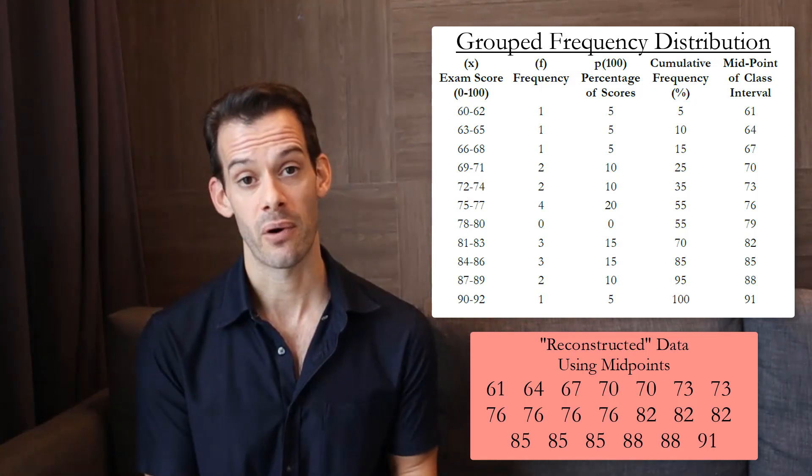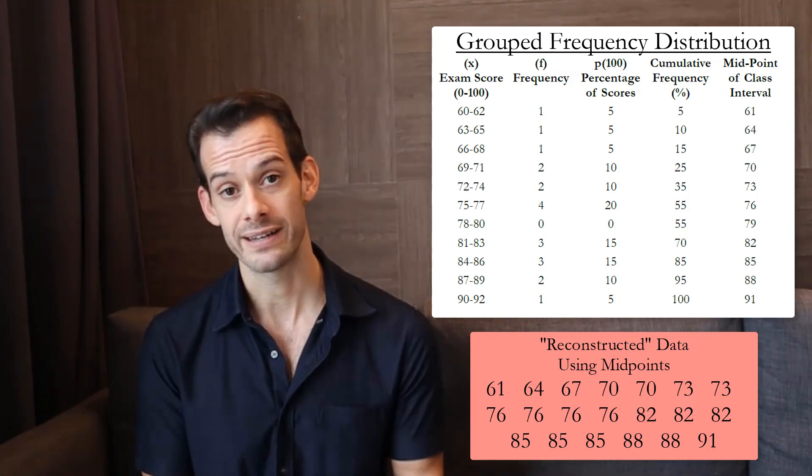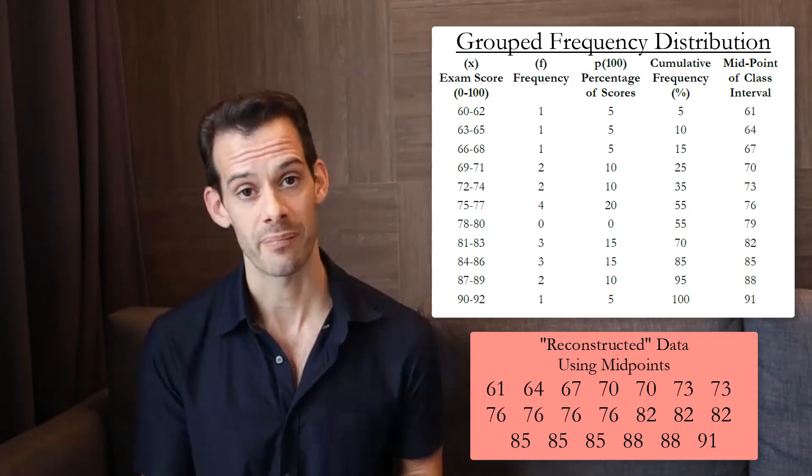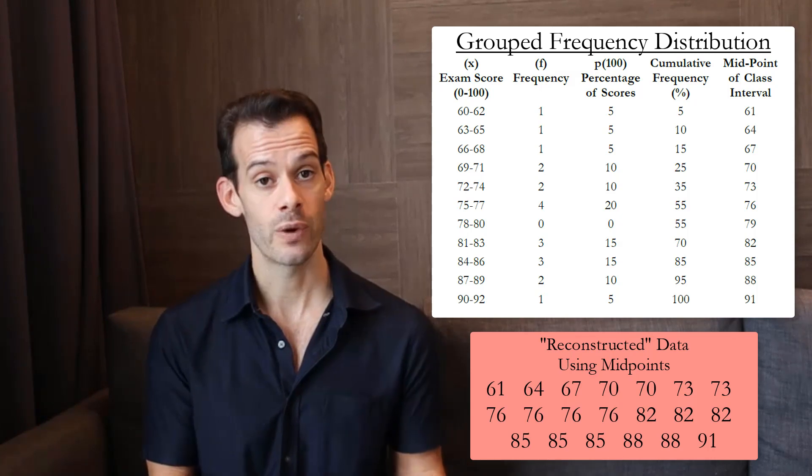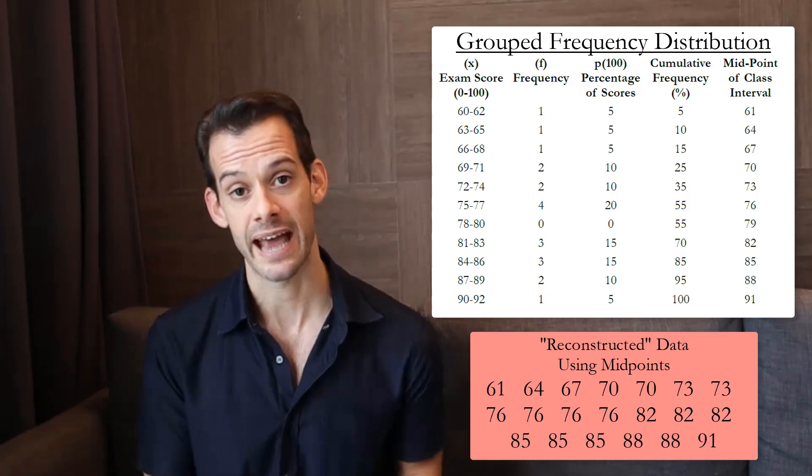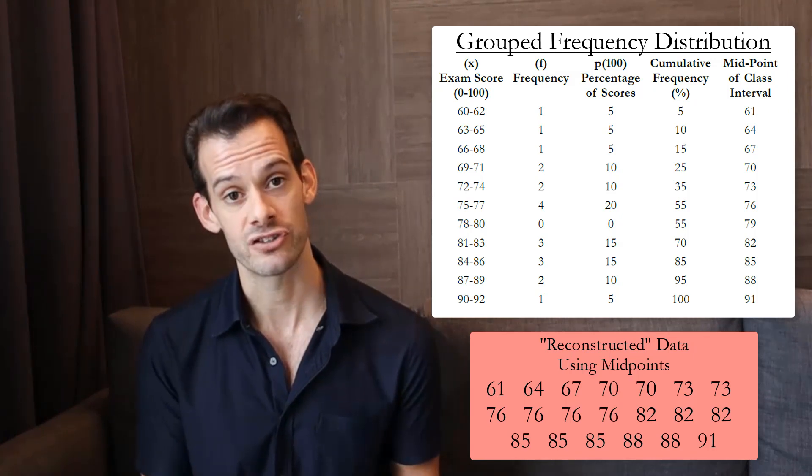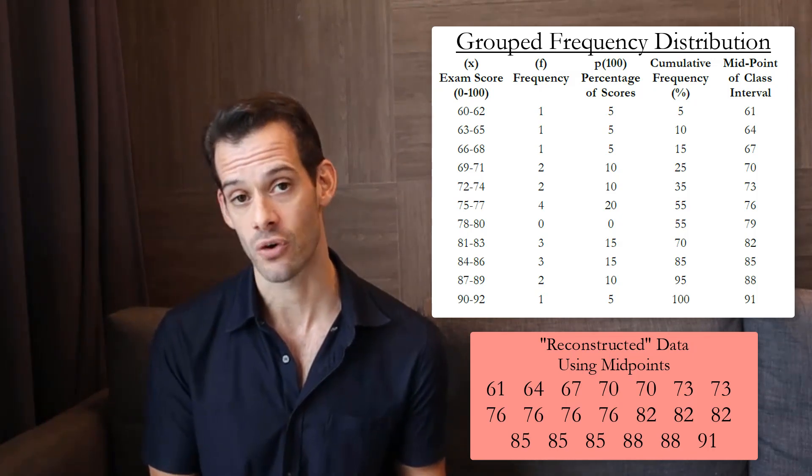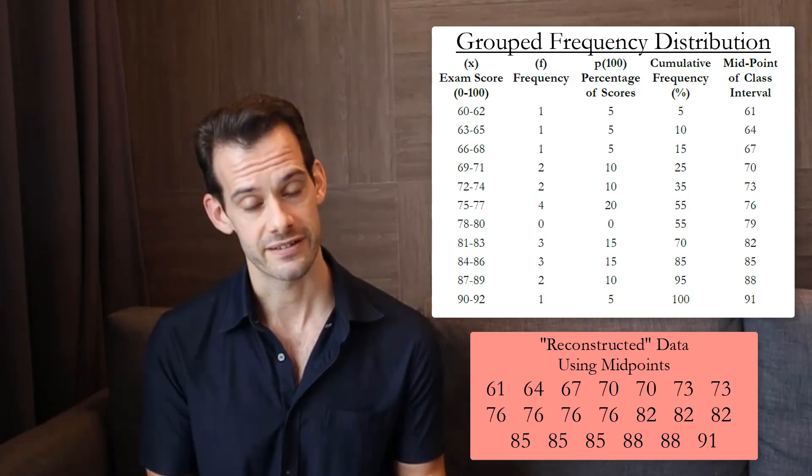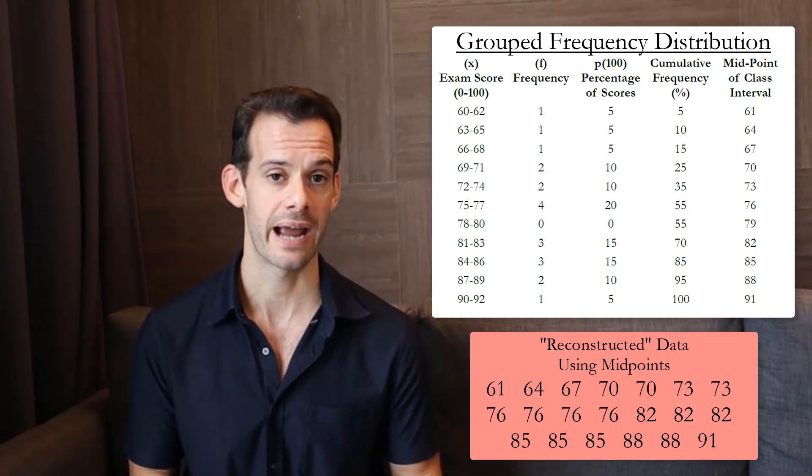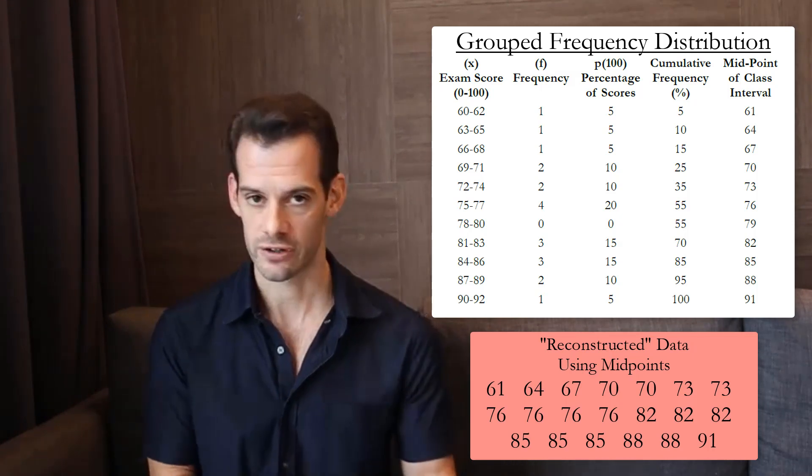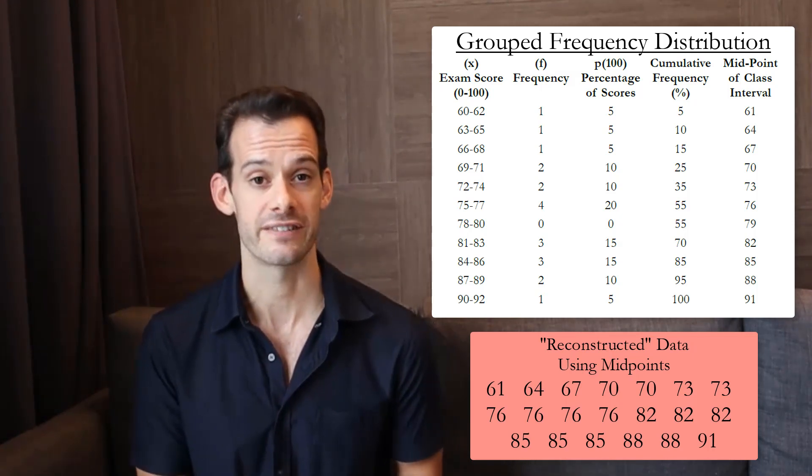So we could estimate x-bar by multiplying the midpoint times the frequency of scores in that class interval. And then adding those up and dividing by n. And we could even do things like estimate the variance. So we take this estimated x-bar and then we compare it to all of the individual midpoint scores. And that would give us a deviation which we could square and sum those deviations up and divide by n-1 in order to get an estimate of the variance. And if we took the square root of that we'd have an estimate of the standard deviation.